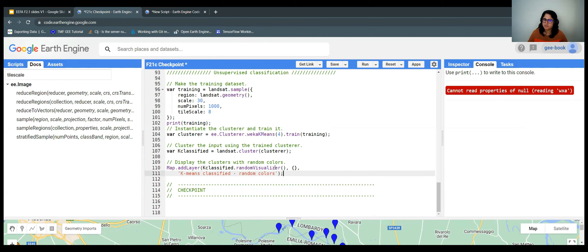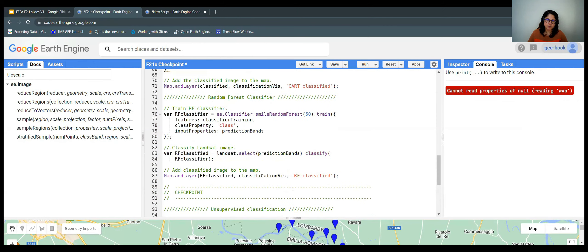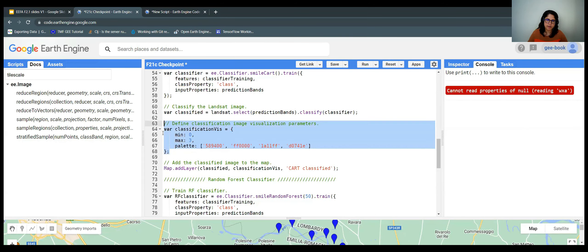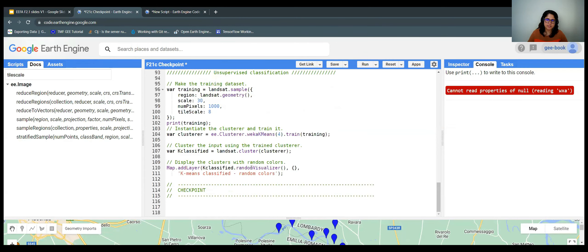You can see that I'm not using the same color palette as the supervised classification. Because in this case, we don't know which class is zero, which class is one, which class is two or three. We have four clusters, but not necessarily the forest will be zero or developed will be one.